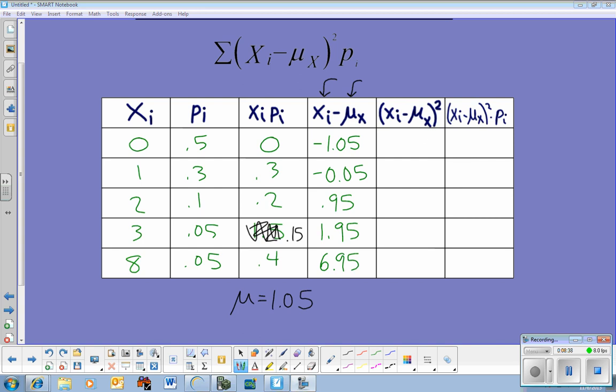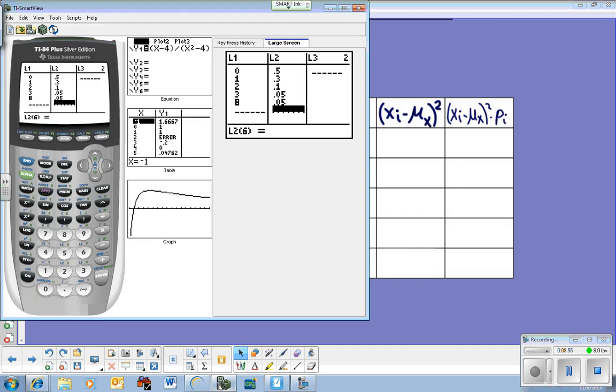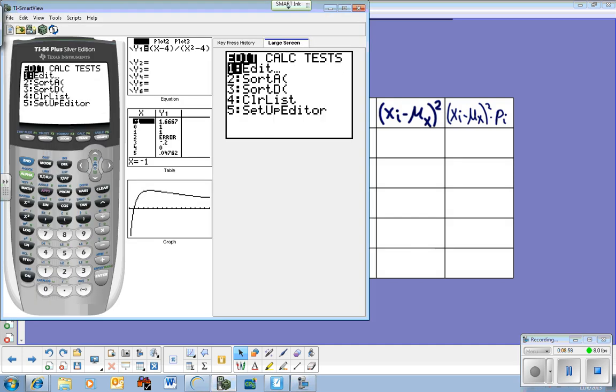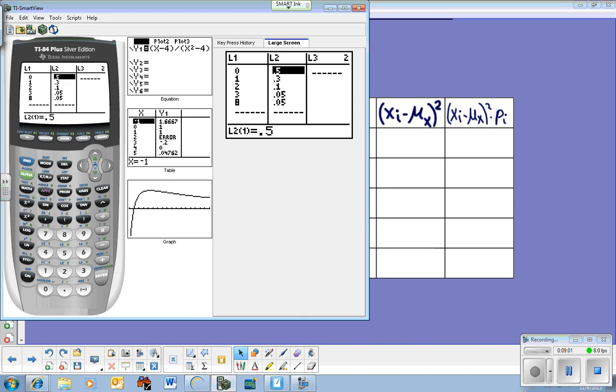Next thing I'm going to do is square these numbers. And then after I square them, I'm going to take them each and multiply them by the probability, the p sub i column. Now, we did this in our calculators probably for regular standard deviation. I'm going to show you this now because this is where it starts to get a little tedious if you're not using the lists in your calculator. Go to your list, the stat edit, where we always spend all of our time.